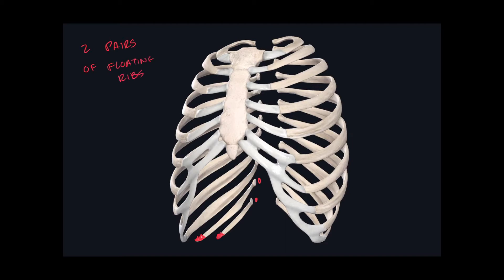The next structure we need to discuss is called the costal arch. The costal arch is made up of the costal cartilages from ribs 7 through 10, and we get this nice, palpable structure called the costal arch.